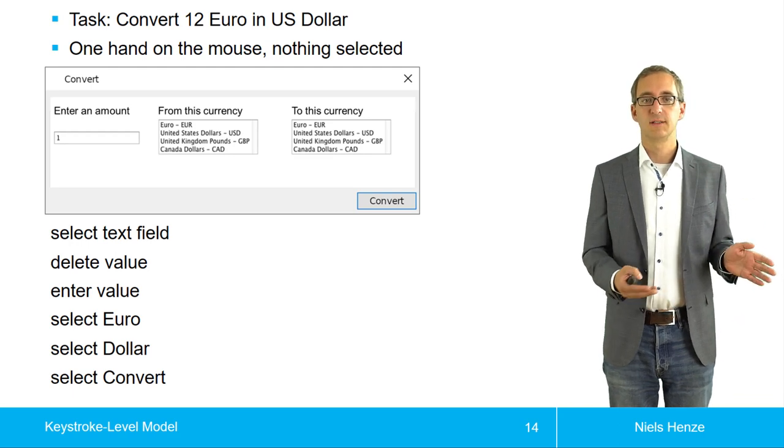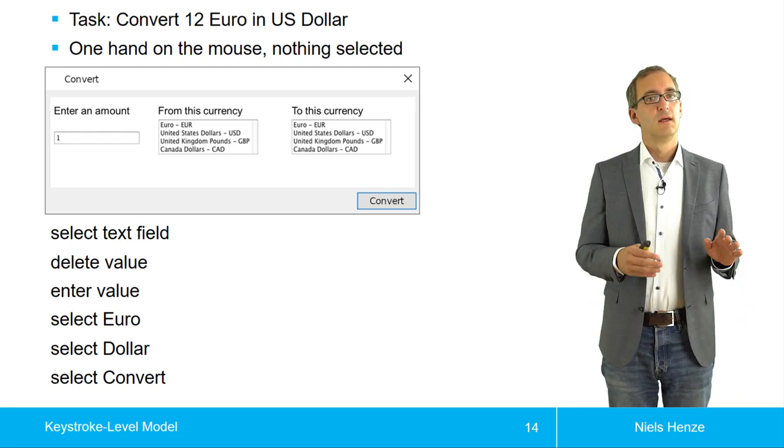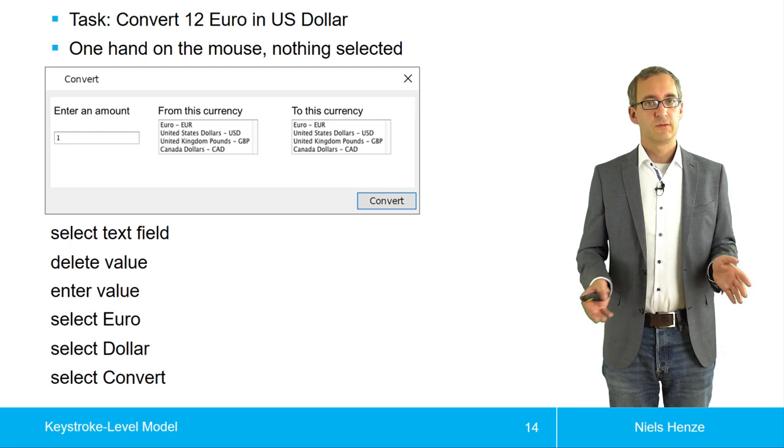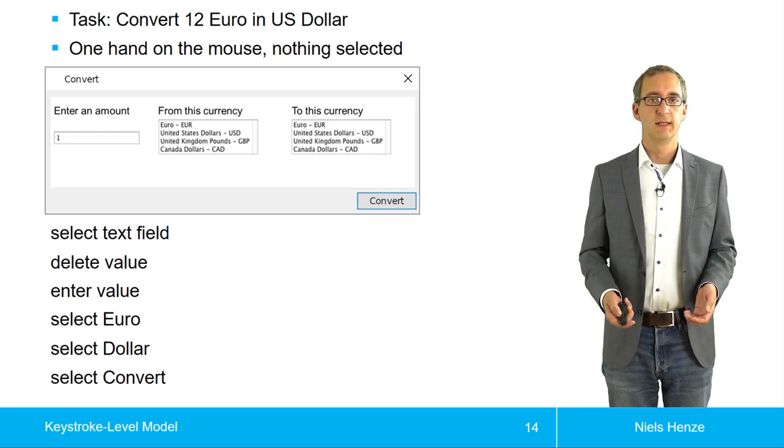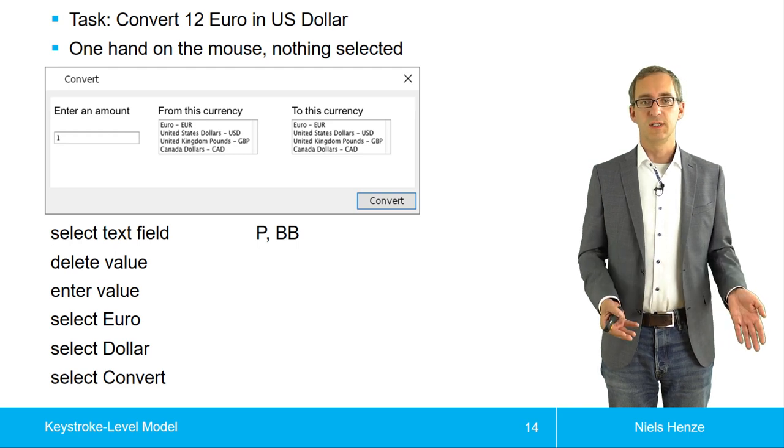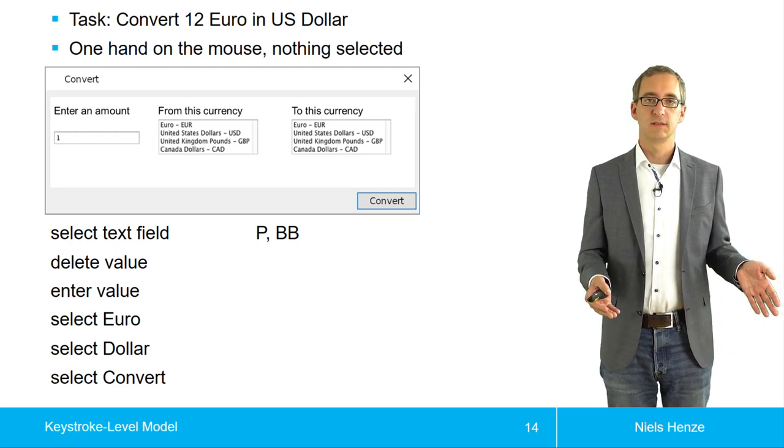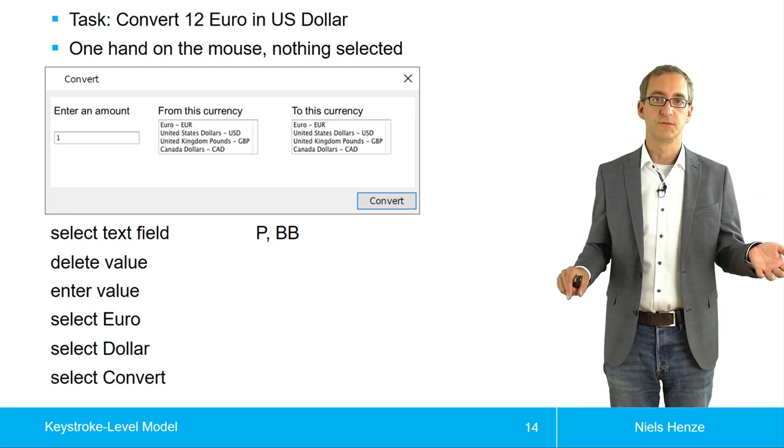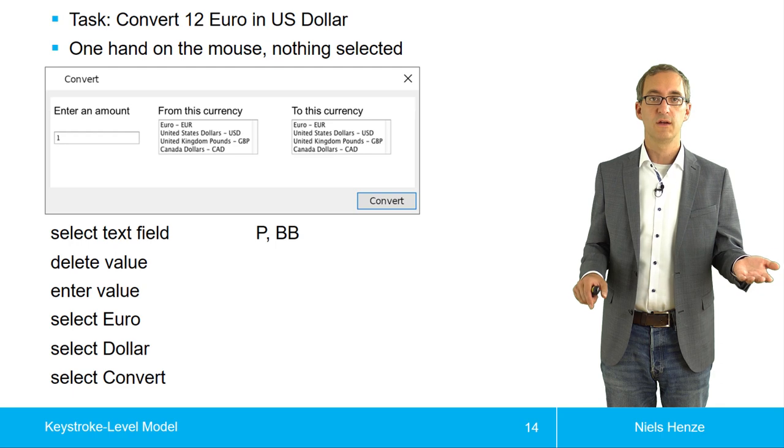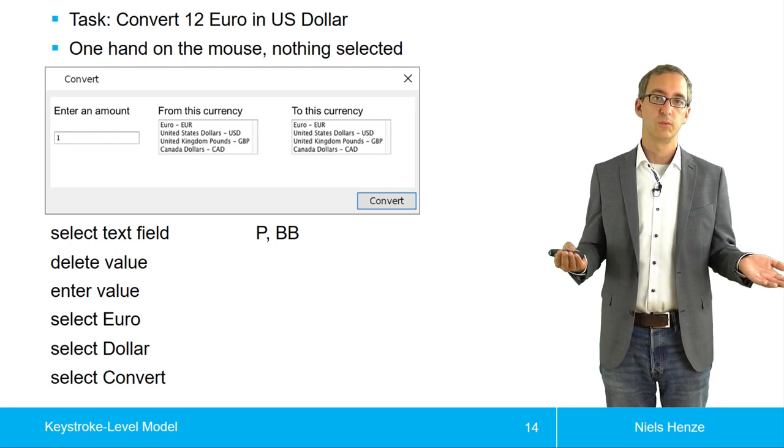We had select text field, delete value, and so on. These are not operators from KLM, so we have to do that again in a more formal way. What does it actually mean, select the text field? We had the hand on the mouse. Now we want to select the text field, which means we have to point there and we have to click. Click is two Bs.